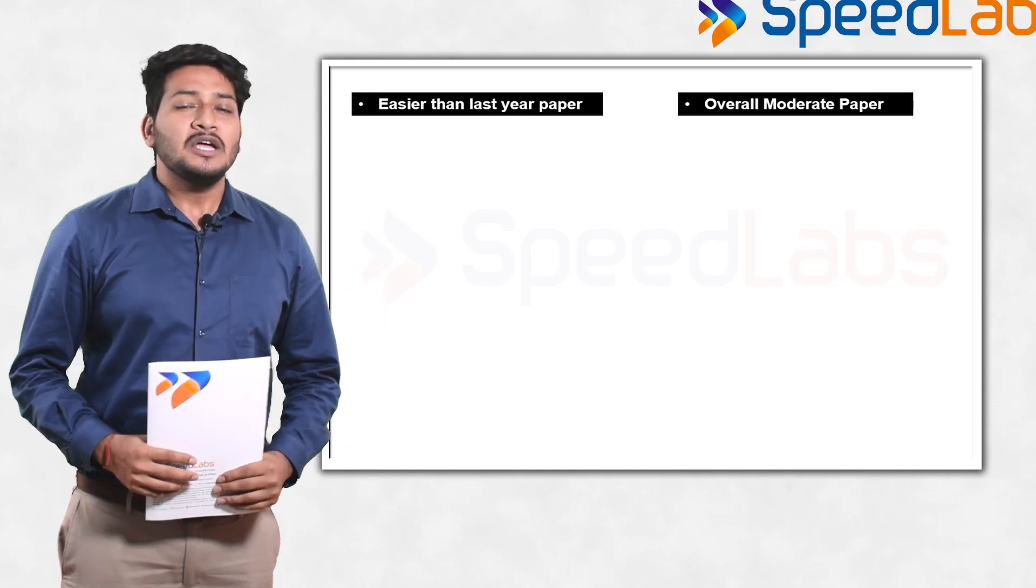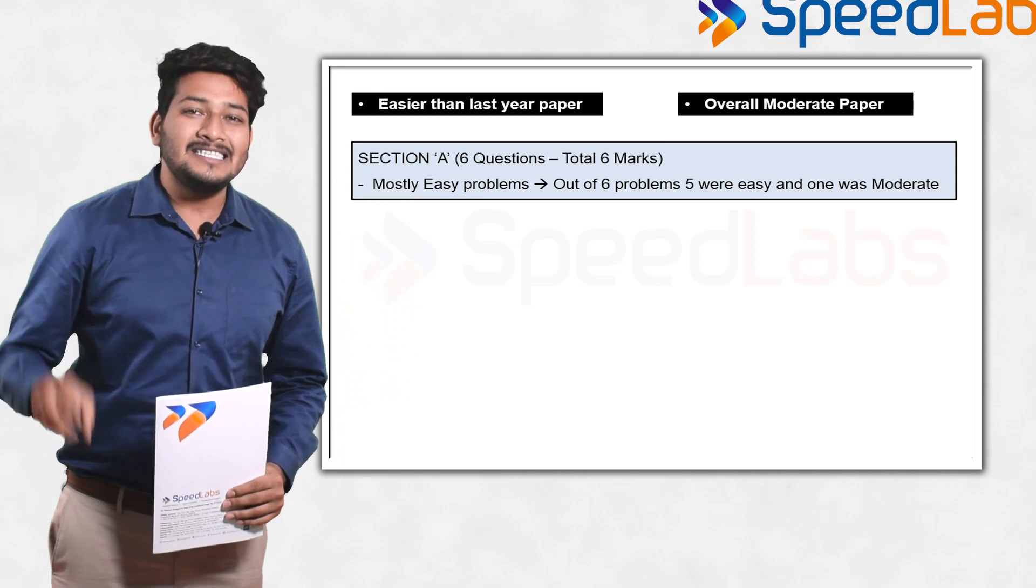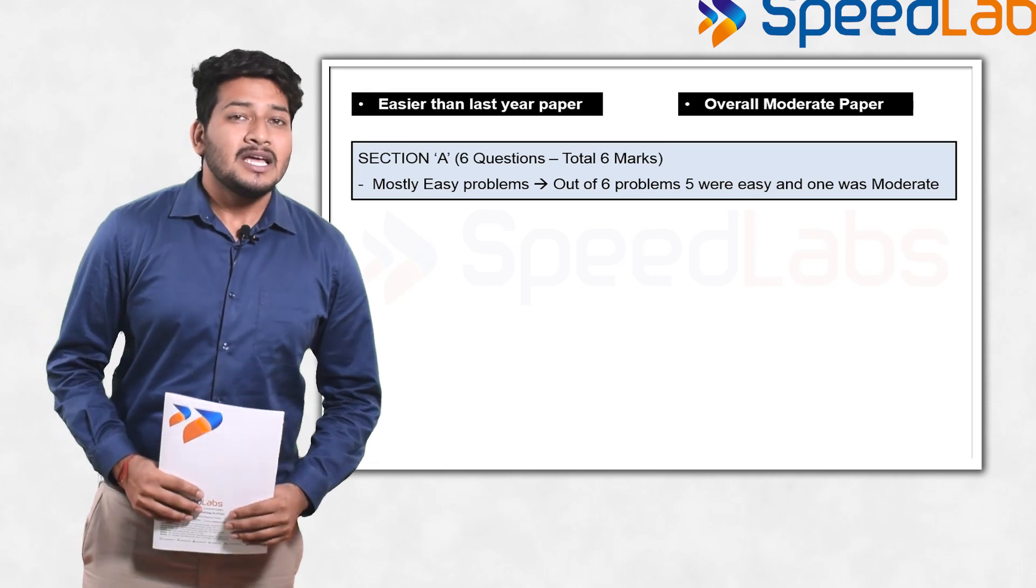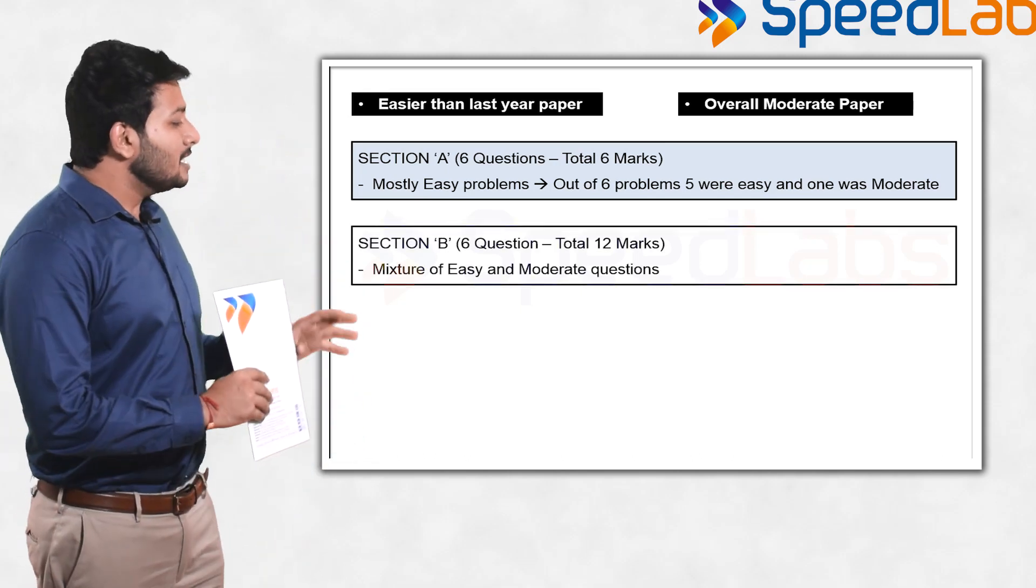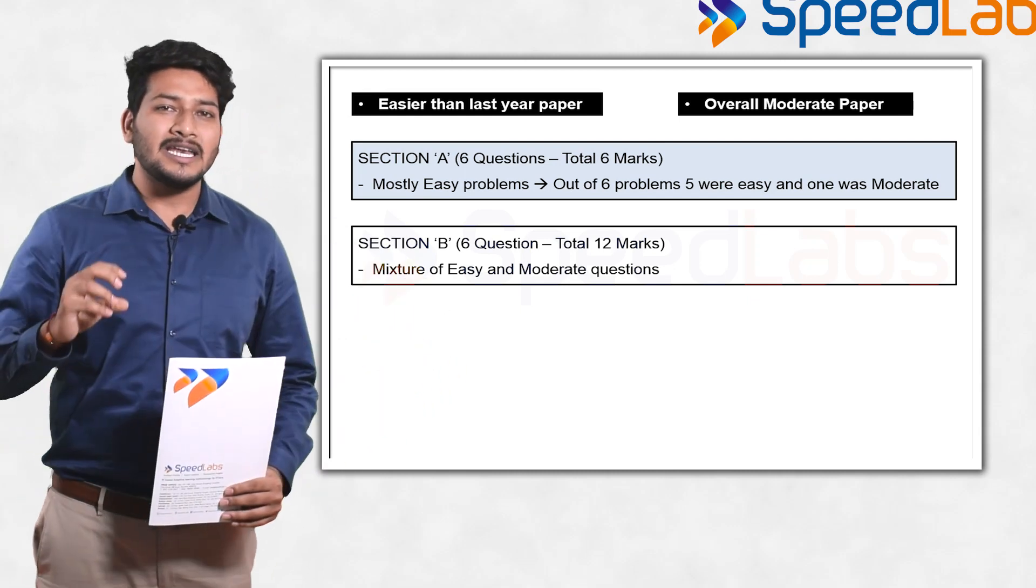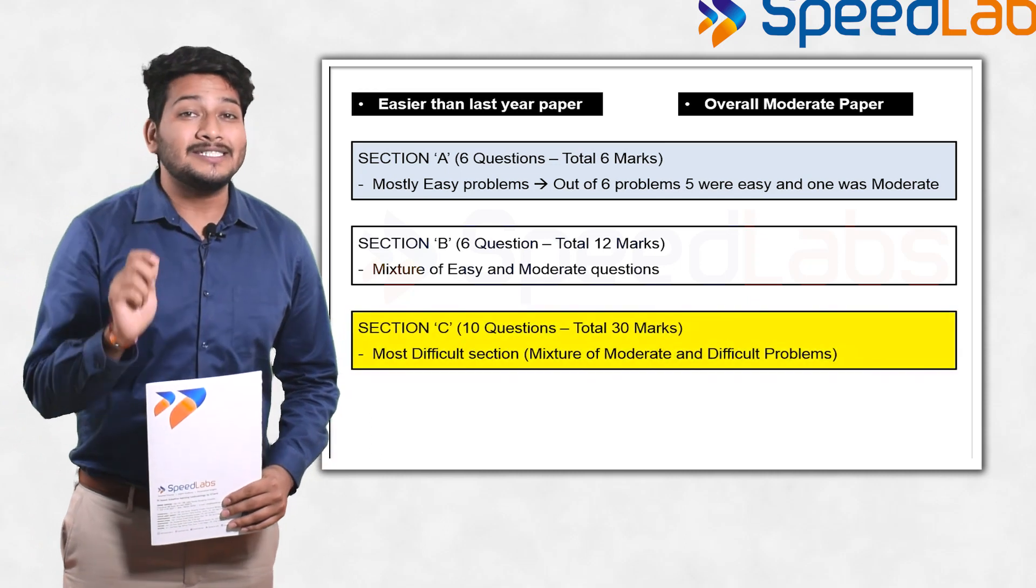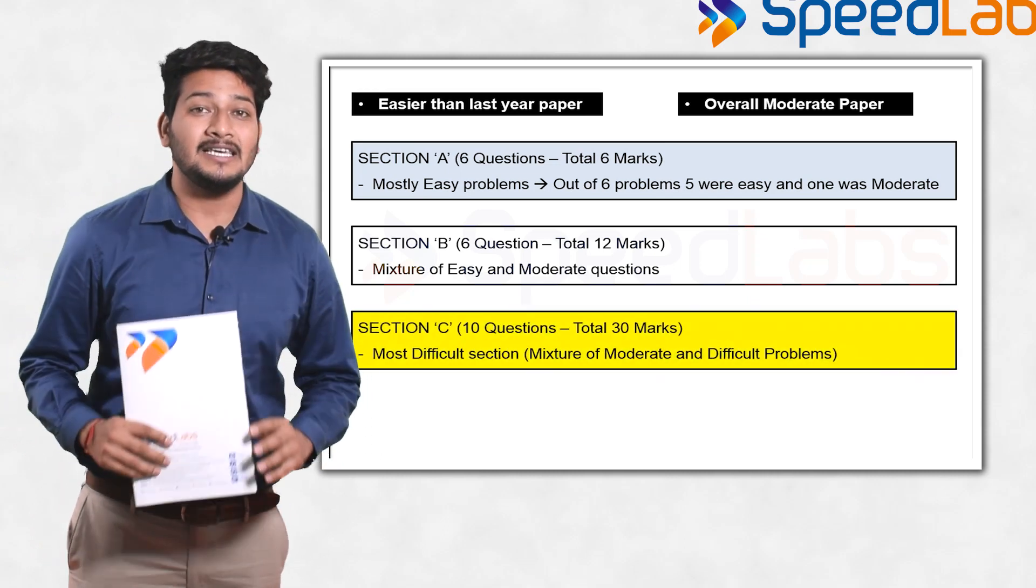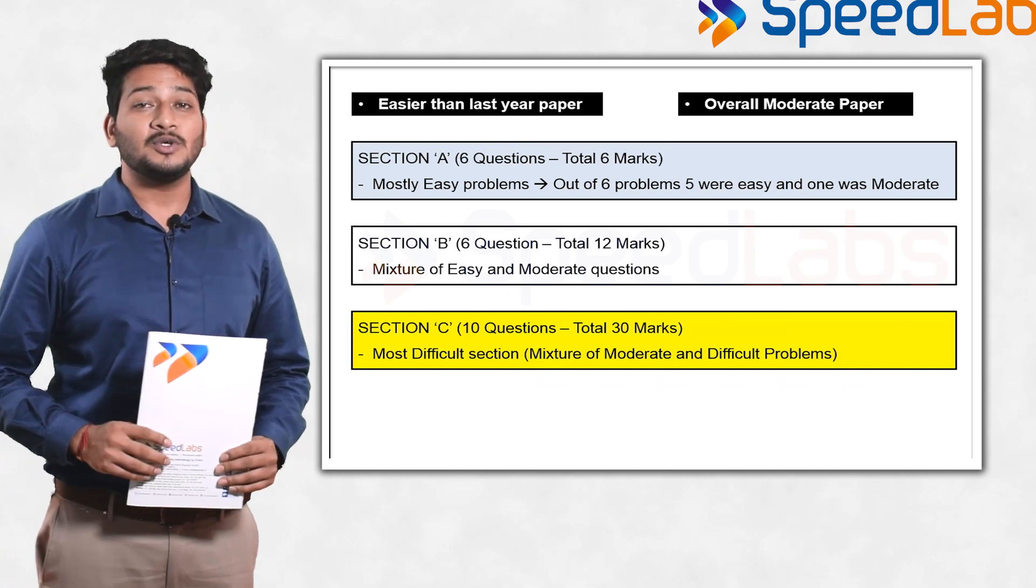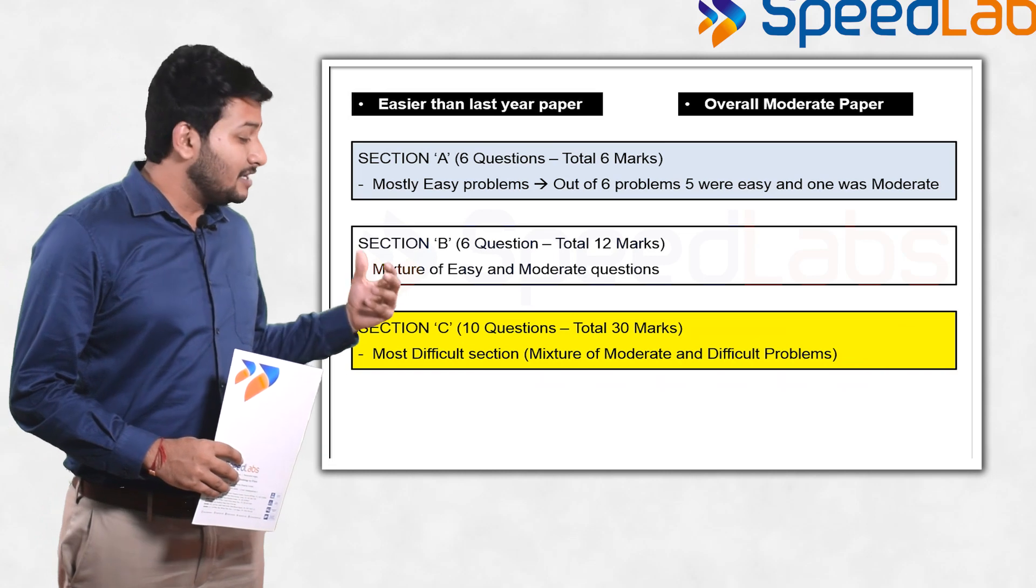Let us do section-wise detailed analysis of the paper. If I talk about Section A, majority of the questions are easy. Out of six, five problems I have kept in the easy section and only one problem in the moderate section. Section B is again a beautiful mixture of easy and moderate problems. Average students will find Section A and Section B easy looking, but the most difficult part of the paper was Section C because it was a mixture of moderate and difficult problems. Only one or two problems I have kept in the easy section, otherwise half of the problems I've kept in the difficult section and many are in the moderate section.